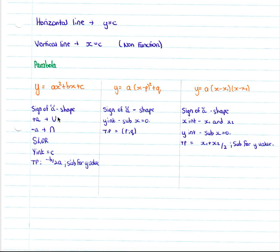A useful rule: if the signs in the equation are the same, the turning point is on the left of the y-axis; if they are opposite, the turning point is on the right. The y-intercept is your c value. The turning point x-coordinate is found using negative b over 2a — taking the coefficient of x divided by 2 times the coefficient of x squared — then substitute that x value into your equation to get your y value and therefore the coordinates of your turning point.